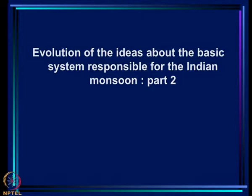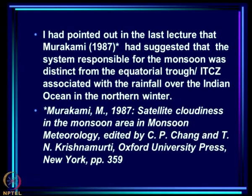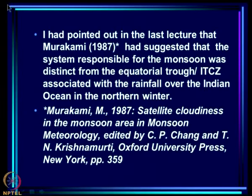We have been talking about the evolution of ideas about the basic system responsible for the Indian monsoon. At the end of the last lecture, we saw that there was a suggestion that the basic system may be the equatorial trough or ITCZ, but there were serious objections to that view. Murakami said that if you look at the low OLR region, the system responsible for the monsoon has to be considered distinct from the equatorial trough or ITCZ associated with the rainfall over the Indian Ocean in the northern winter.